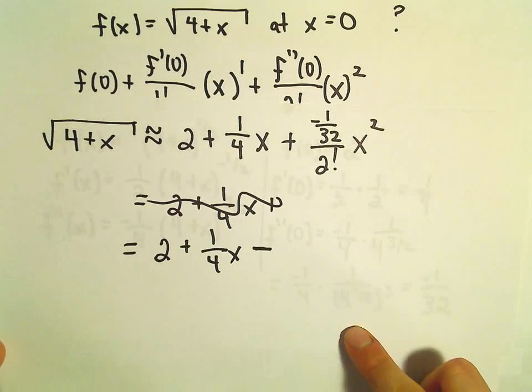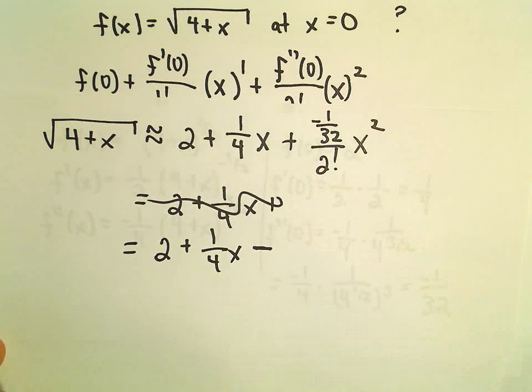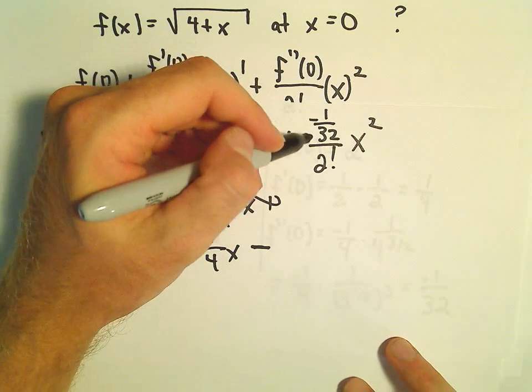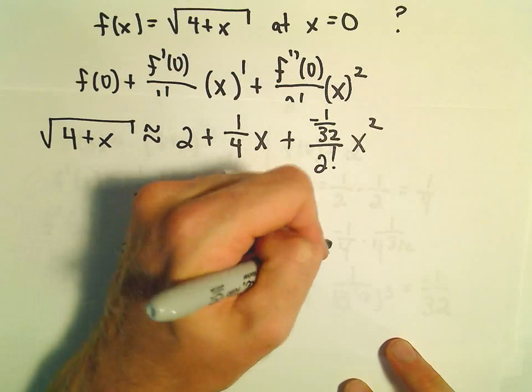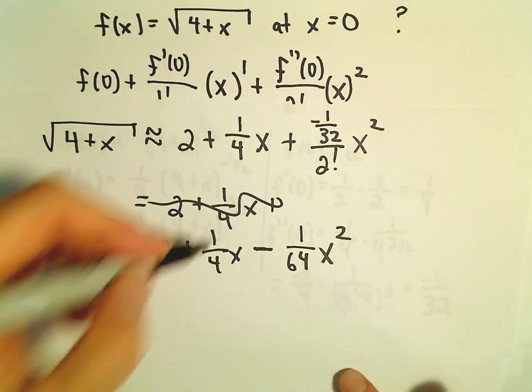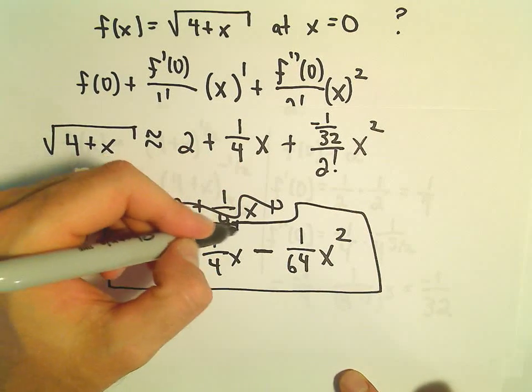So 2 plus 1 fourth x, the next term, the last term will be negative. 1 over 32 divided by 2 factorial. That's just going to be negative 1 over 32 divided by 2. That'll give us negative 1 over 64 times x squared. And now we have our quadratic, again, degree 2 approximation for the function square root of 4 plus x.